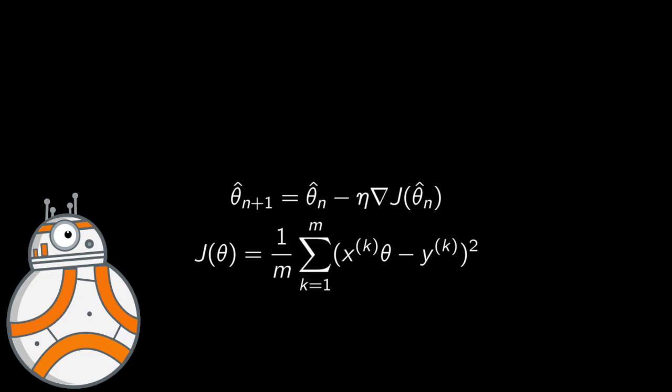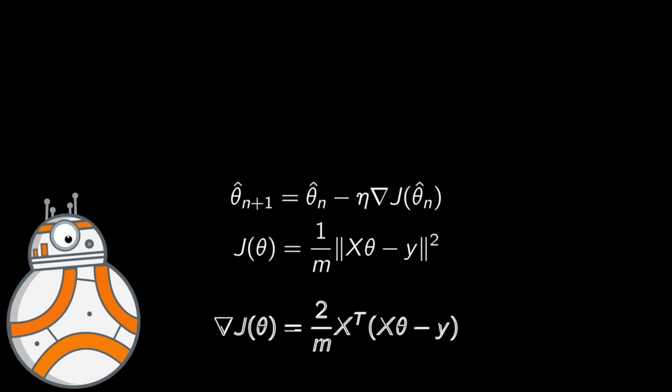Well, in matrix form, it is the cost function J of theta that minimizes these squares. Well, since we need the gradient of this function of J of theta, then we have to compute it. And as you can see, it is the difference between X theta and Y, post-multiplied by X transpose, then you take a scaling factor of 2 over m. The 2 comes from the square and the m is the number of samples.